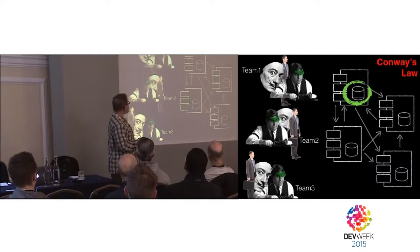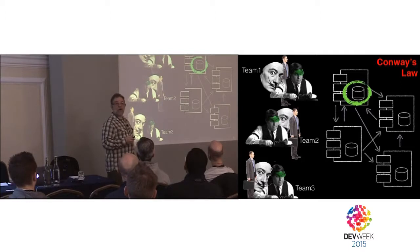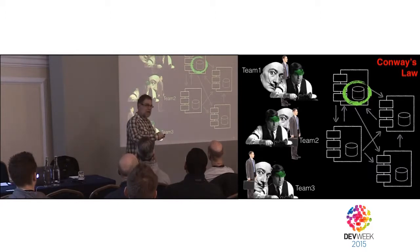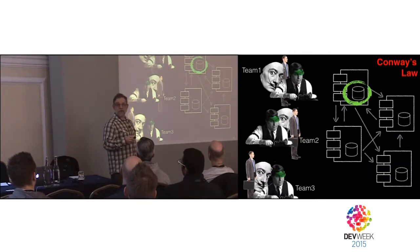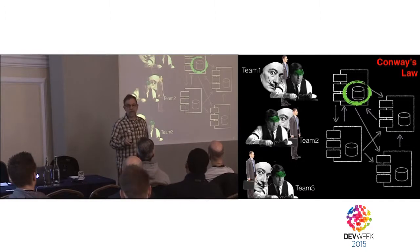Each one of these microservices has its own database. There won't be a big monolithic database in a microservice system — every object is responsible for maintaining its own state. That gets back to the basic notions of object-oriented design. From my point of view, the difference between an object and a microservice is just a mechanical one of how you send the messages.